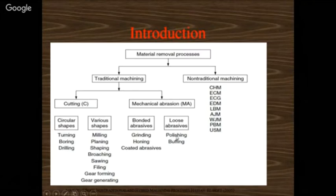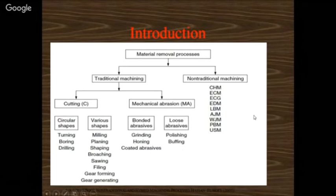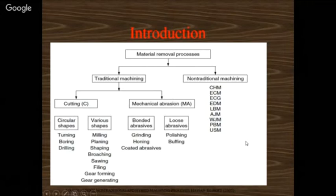In bonded abrasives we have grinding, honing, and coated abrasives where coating is applied to abrasives similar to tool coatings in machining. Loose abrasives include polishing and buffing. Non-traditional machining has four kinds of processes: chemical, electrochemical, photochemical, and thermal. These include CHM (chemical machining), ECM (electrochemical machining), electrochemical grinding, EDM (electro discharge machining), laser beam machining, abrasive jet machining, water jet machining, plasma beam machining, and ultrasonic machining — various sources used to develop machining.